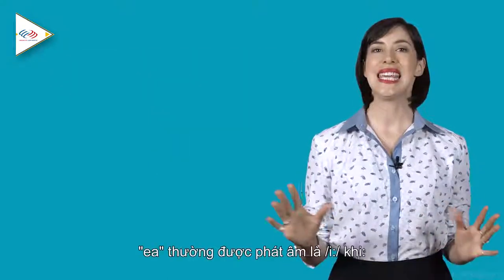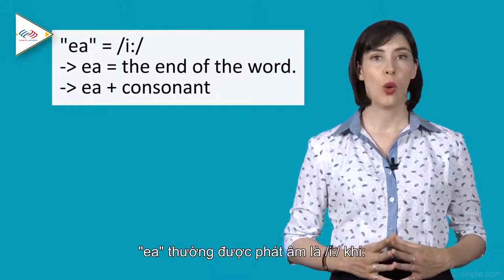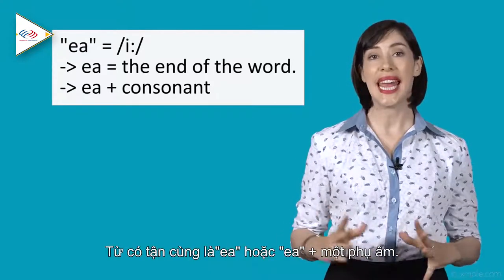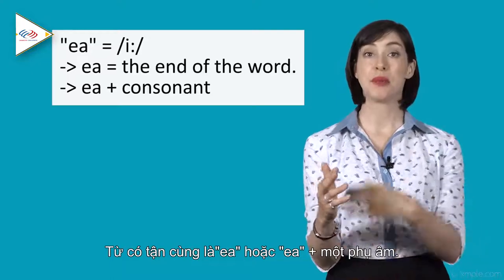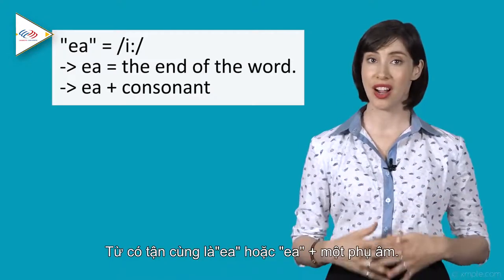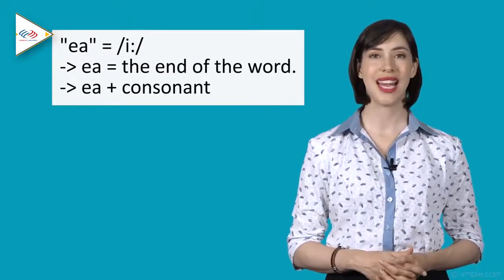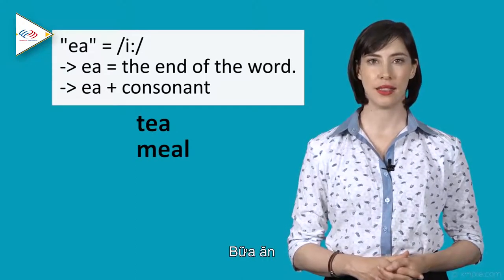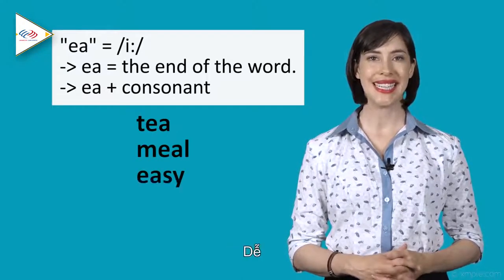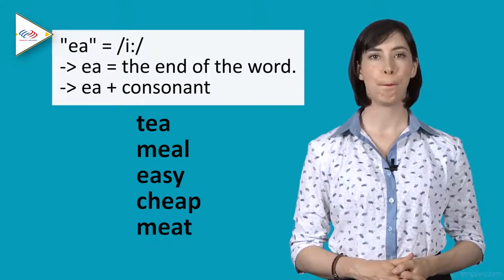Number two: EA is pronounced as a long E when EA is at the end of the word or comes before a consonant. For example: tea, meal, easy, cheap, meat.